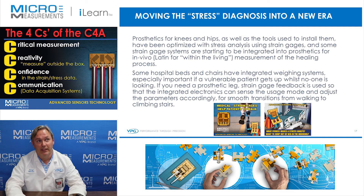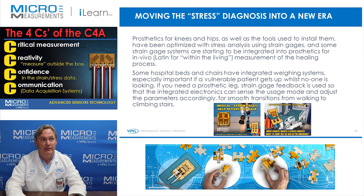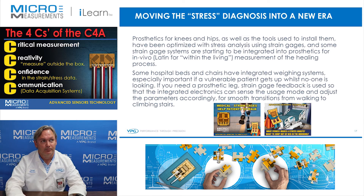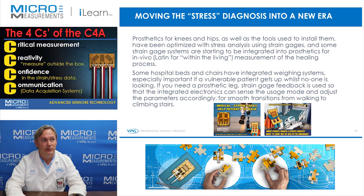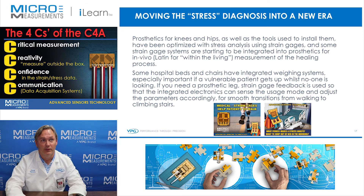Some hospital beds and chairs have integrated weighing systems, especially important if you have a vulnerable patient who gets up while no one is looking. If you need a prosthetic leg, strain gauge feedback is used so that the integrated electronics can sense the usage mode and adjust the parameters accordingly for smooth transitions from walking to climbing stairs.